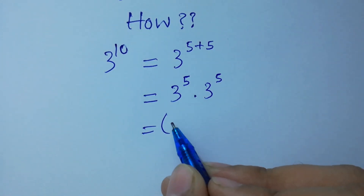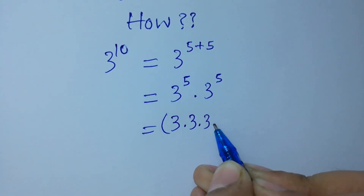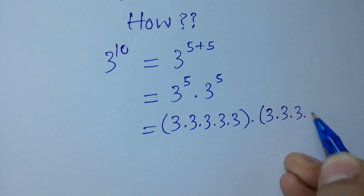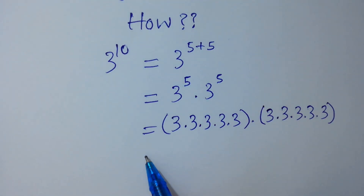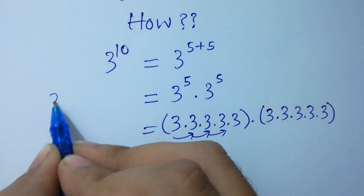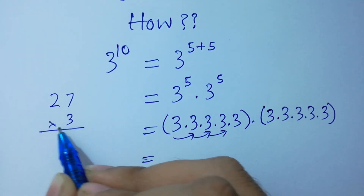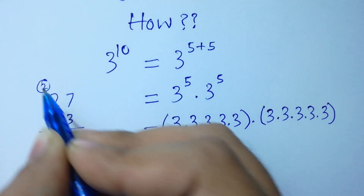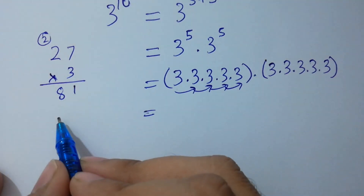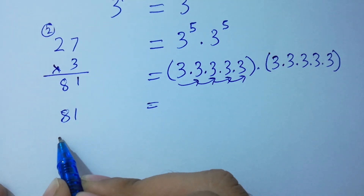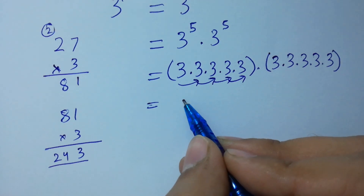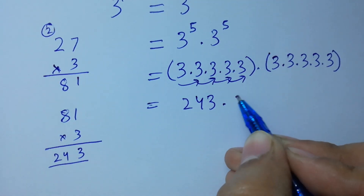Multiplying 3 five times: 3 times 3 is 9, times 3 is 27, times 3 — 7 times 3 is 21, write 1 carry 2, 2 times 3 is 6, plus 2 is 8 — so 81. Then 81 times 3: 3 times 1 is 3, 8 times 3 is 24, giving 243. So 3 to the power 5 equals 243, and similarly the other factor is also 243.